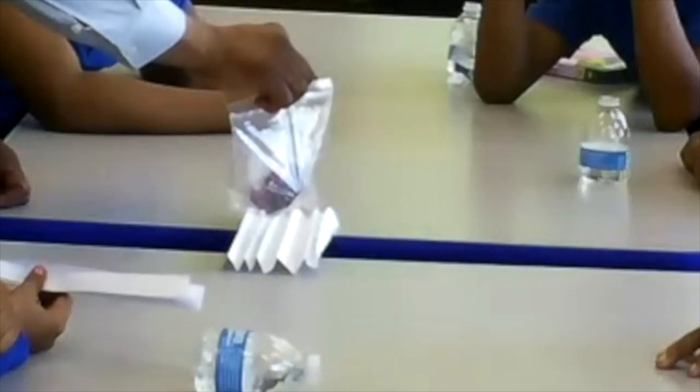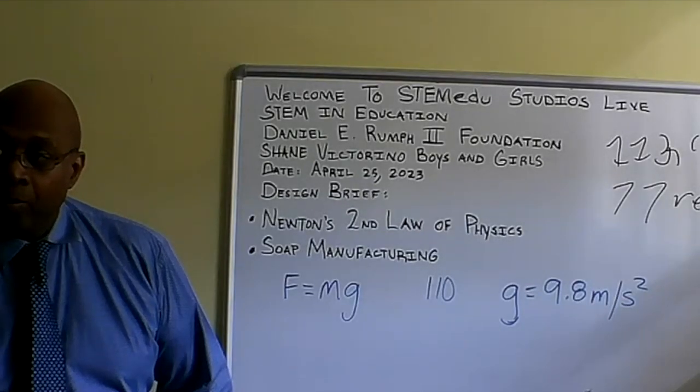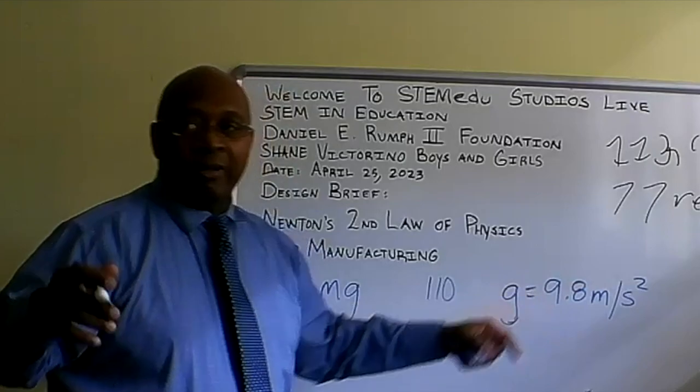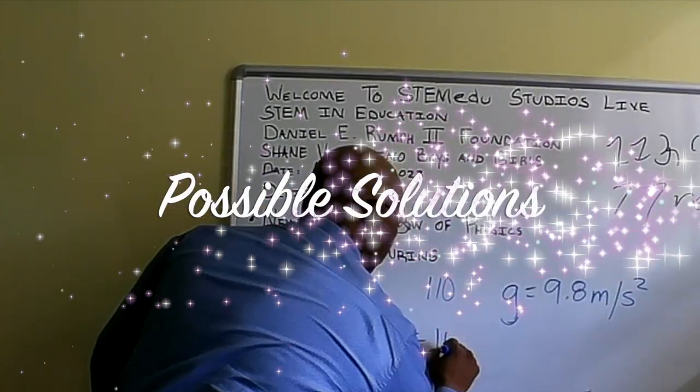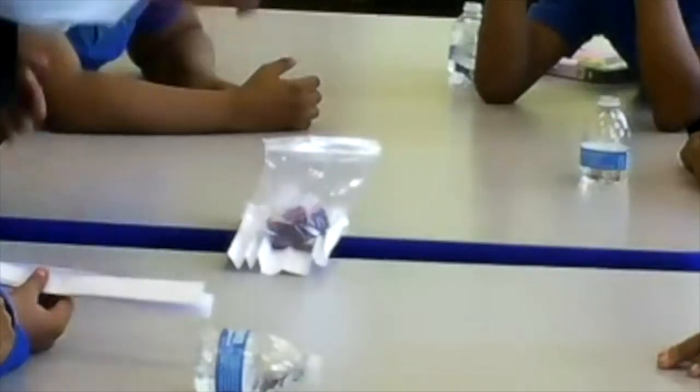What are we going to do with M? Multiplied by what? Multiplied by G. And what is G? You guys are brilliant. Force equals 110 times 9.8.